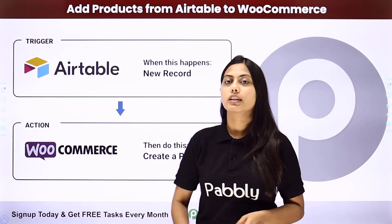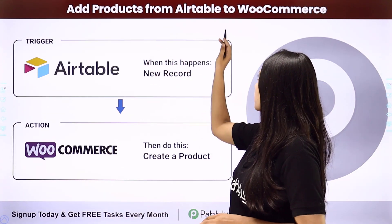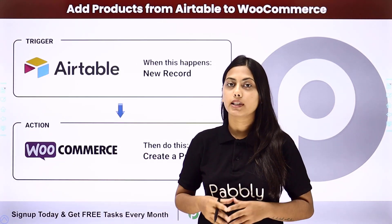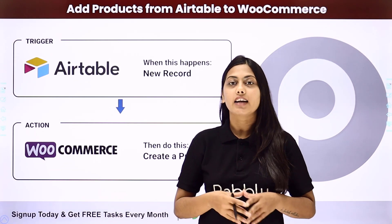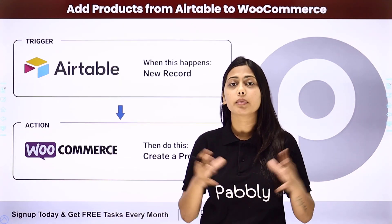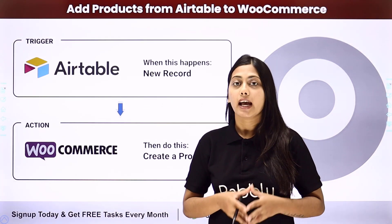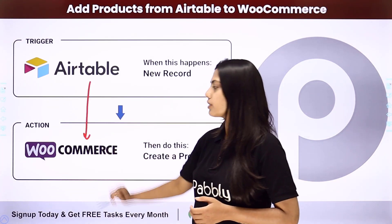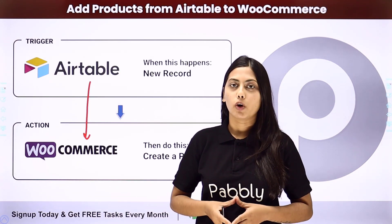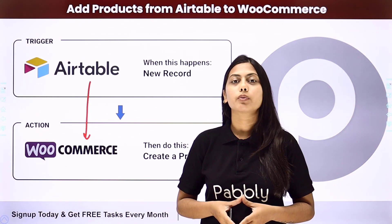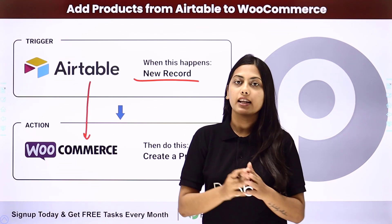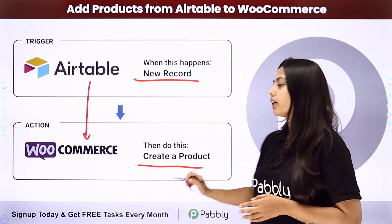Hello everyone. In this video we will learn how to add products from Airtable to WooCommerce. If you want to create products in WooCommerce every now and then, you have to do it manually again and again. I would like to suggest using this automation where you can collect all the information related to a product in your Airtable record and integrate Airtable and WooCommerce so that when a new record is added in Airtable, the product gets created in WooCommerce. This automation can be created with the help of Pabbly Connect, where our trigger will be the new record created in Airtable and our action will be to create a product in WooCommerce.